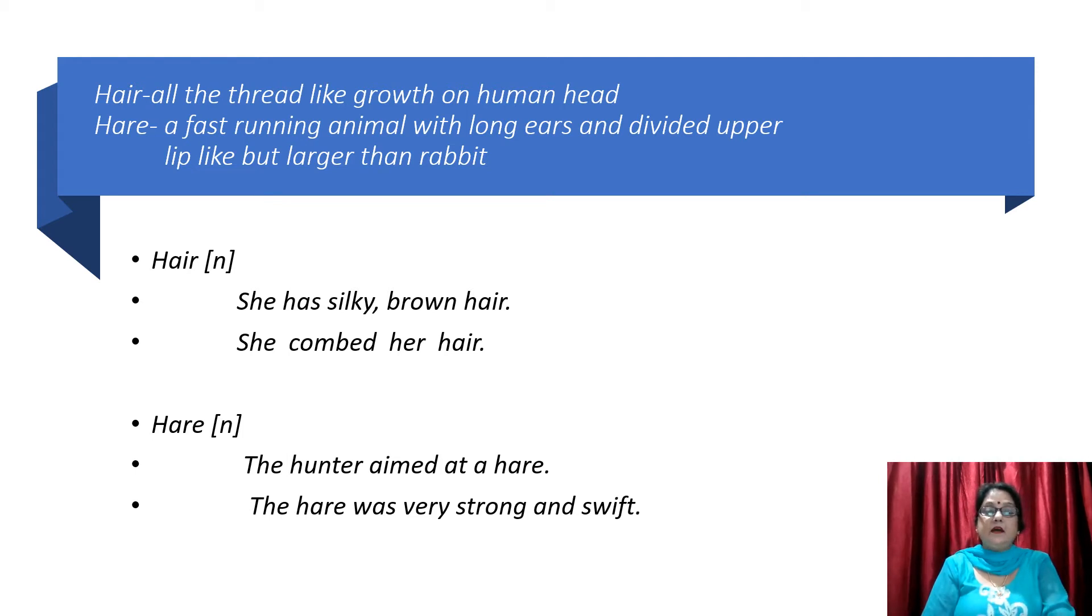Hare. Hare means fast-running animal with long ears and divided upper lip like but larger than rabbit. Ye rabbit hi hai, lekin iski jo size hai, wo thoda bada hota hai. Okay, so that is hare.